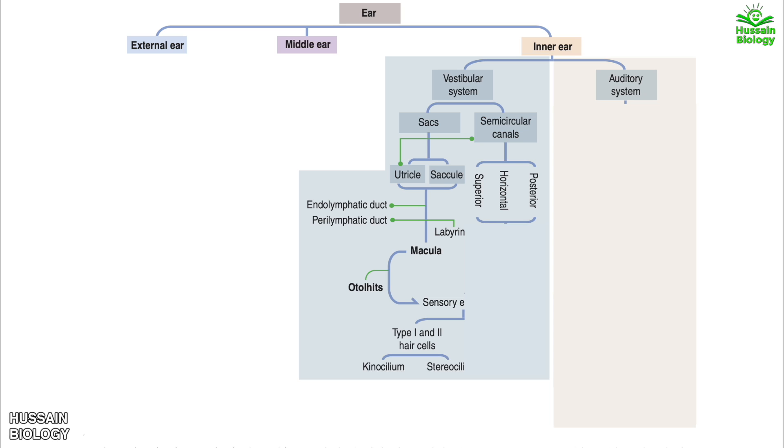On the other hand, when we go to the semicircular canals, we see it forms a dilated sac called a membranous ampulla. Each ampulla contains an ampullary crest, the crista ampullaris, which consists of a thick gelatinous cap called a cupula and many sensory cells.